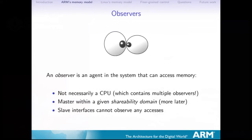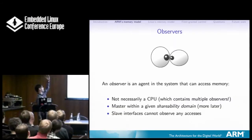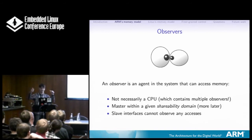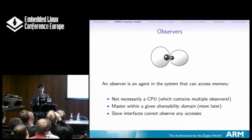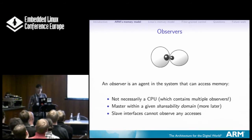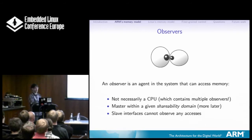With that out of the way, I'll talk about what ARM does, then what Linux does, and then some stuff I wrote which makes it harder to use but more performant. To talk about ARM, I'm going to talk about observers. An observer is someone that can master memory — someone who can read from memory or write to memory. It's not a slave device. A CPU actually has multiple observers: it has an instruction fetch, the D side, the table walker — they're all separate observers.